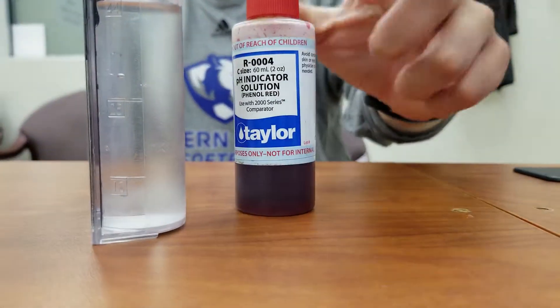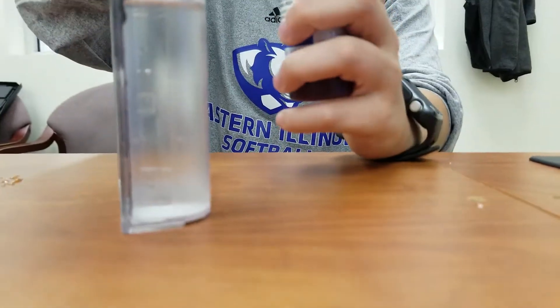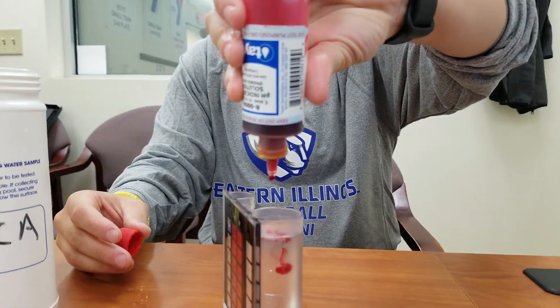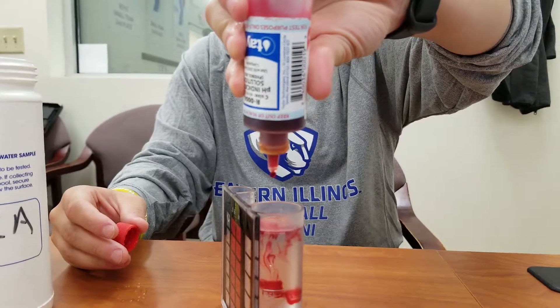We're going to take five drops of reagent R004, the pH indicator solution. We want to make sure we keep the reagent tube straight up and down; turning it slightly to the side will mess it up.